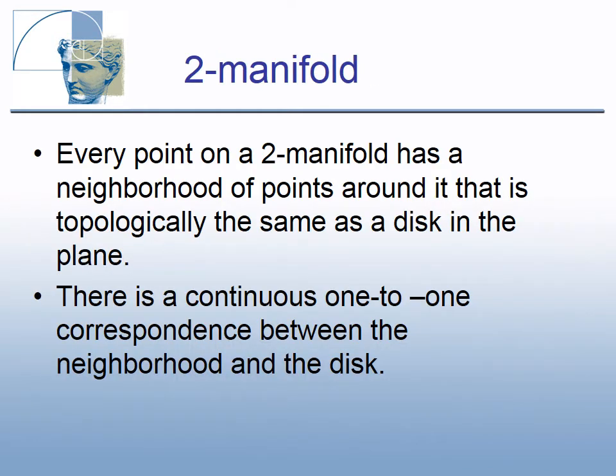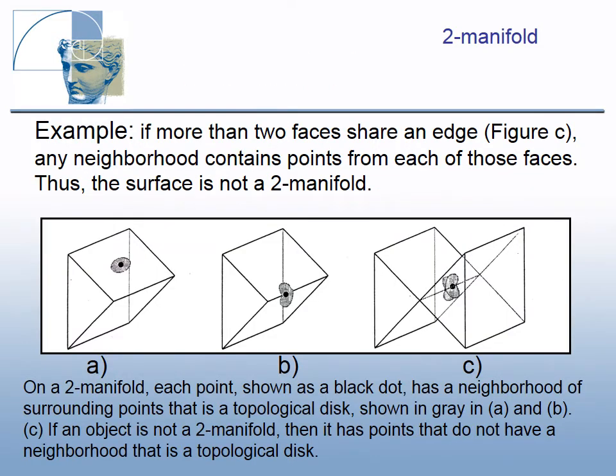A two-dimensional manifold, or simply a two-manifold, is a formal description of a surface with good behavior. Every point on a two-manifold has a neighborhood of points around it that is topologically the same as a disk in the plane. There is a continuous one-to-one correspondence between the neighborhood and the disk. If an object is not a two-manifold, then it has points that do not have a neighborhood that is a topological disk.